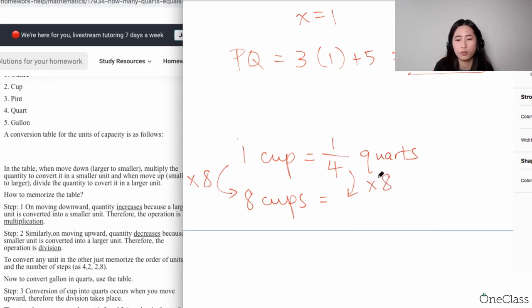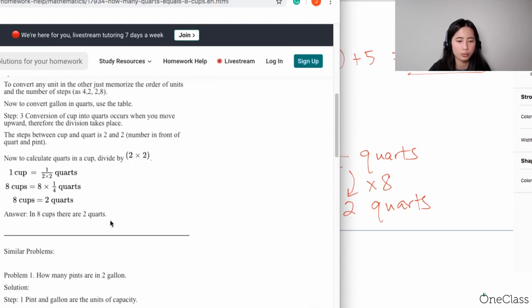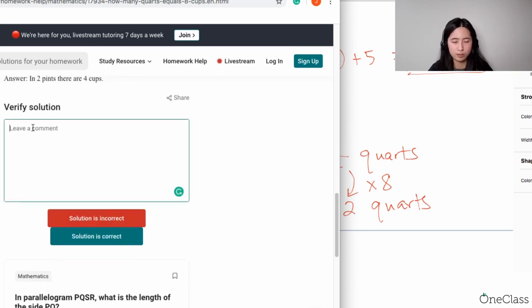...take one over four times eight, so that's going to be two quarts. Make sense? So that's why you know that for eight cups it's actually two quarts. Right there! Boom! Okay great. Yeah, this is perfect.